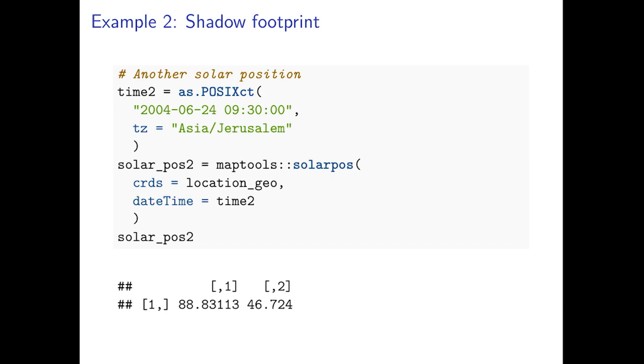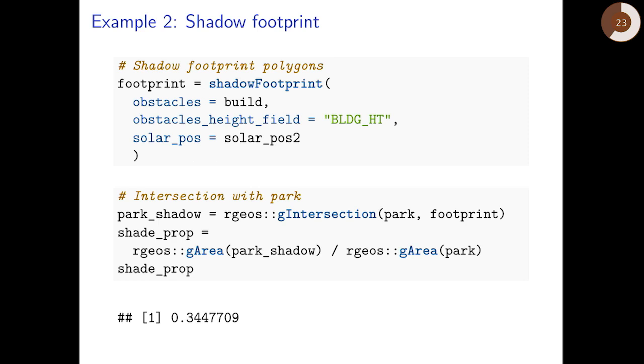For this let us take another point in time, for example 9:30 in the morning, 24th of June. Once again we can use function solarpos to calculate sun position. In this case it is at azimuth angle of 89 degrees and elevation angle of 47 degrees.